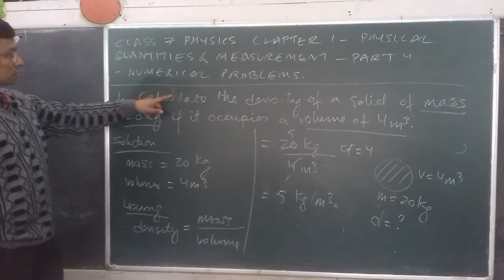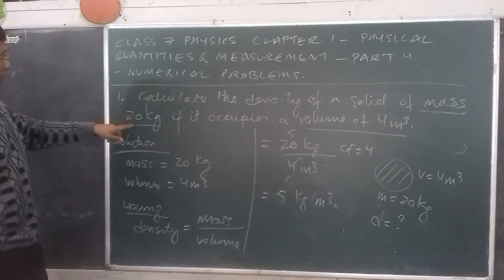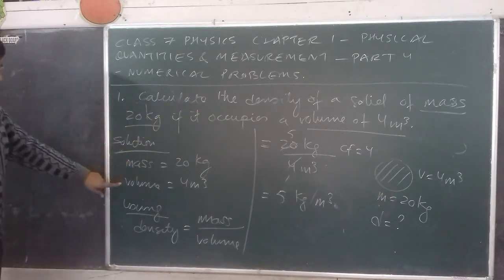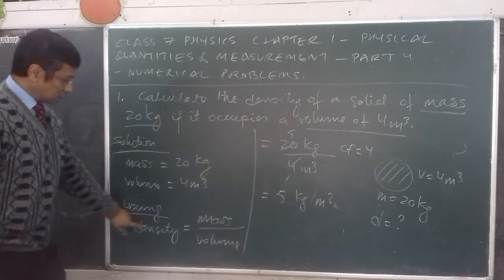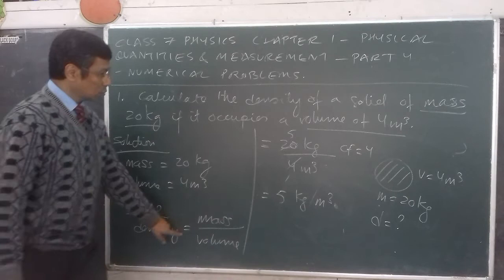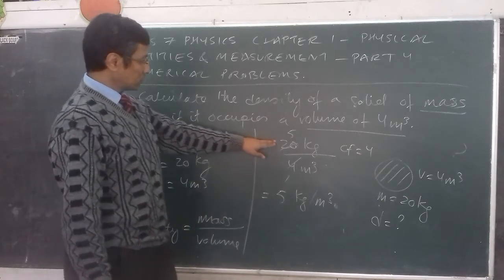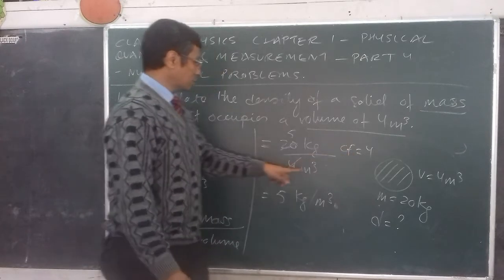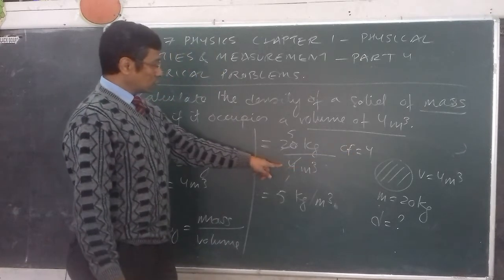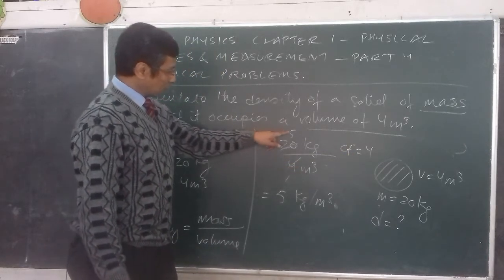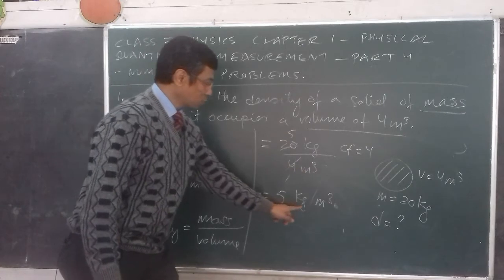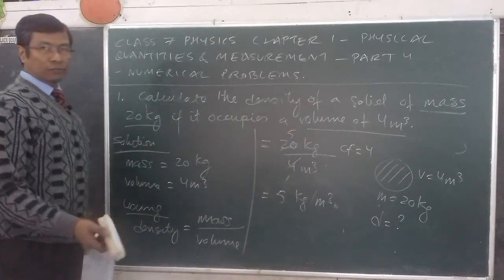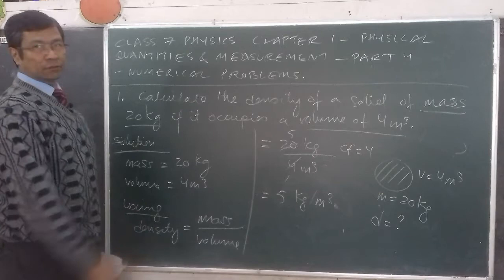So for this question, density of a solid of mass 20 kg occupying a volume of 4 meter cube: mass is 20, volume is 4. Using the formula density equals mass upon volume, substituting the values 20 divided by 4, reducing by factor of 4, we get 5 kg per meter cube. You can pause the video and copy this.